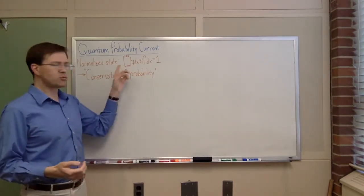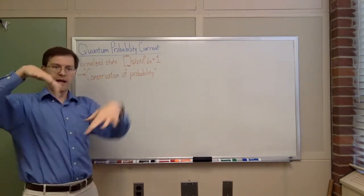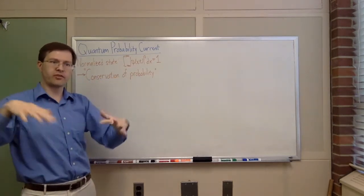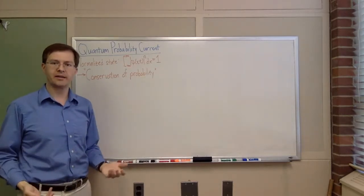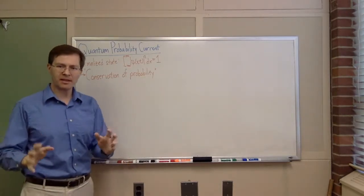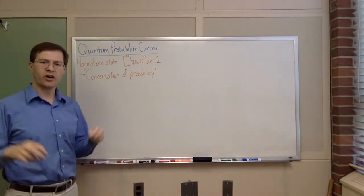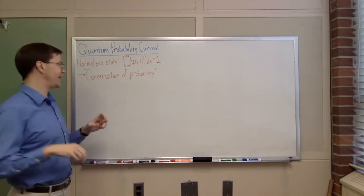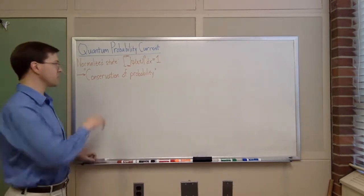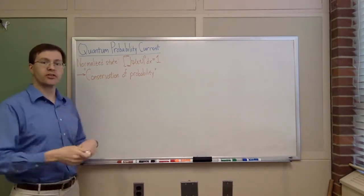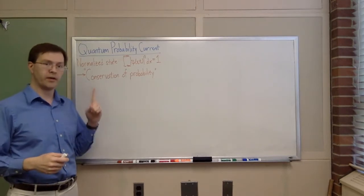That has to be true for all times, so even as our wave function changes with time and evolves in funny ways, the total has to still be 1. And I'm going to claim that we can think of this as a sort of conservation of probability idea — that no matter how the system changes, the total probability has to be the same, has to be 1.